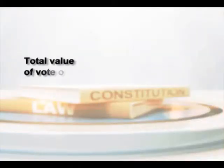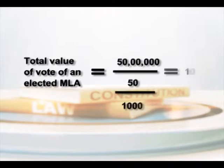Let us take a hypothetical example. If we assume the population of the state is 50 lakh and the total number of elected members in the state legislature is 50, then the total votes of an elected MLA will be 50 lakh divided by 50, which comes to 1 lakh, further divided by 1000, giving the result of 100. So the value of each vote of an elected MLA equals 100. In case there exists a remainder which is more than 500, the votes of each candidate are to be increased by 1.